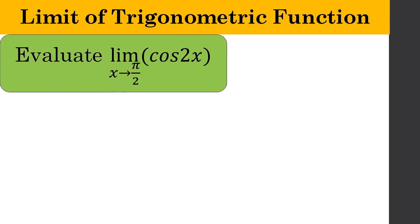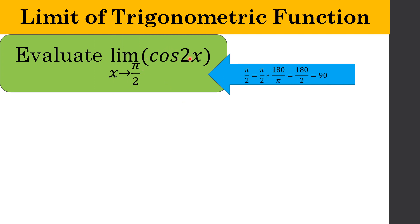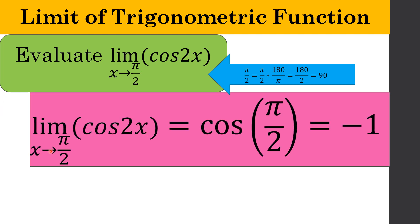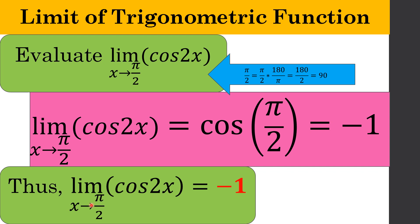Evaluate the limit of cos 2x as x approaches pi over 2. If your calculator is not in radian mode, convert pi over 2 by multiplying by 180 over pi to eliminate the radian — 180 divided by 2 gives 90 degrees. So pi over 2 equals 90 degrees. The limit of cos 2x as x approaches pi over 2 equals cos(2 × 90°) which gives negative 1. Hence, the limit of cos 2x as x approaches pi over 2 is negative 1.